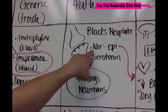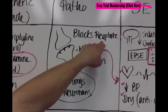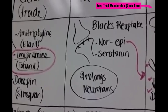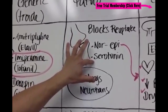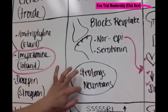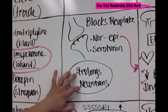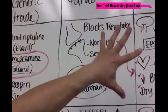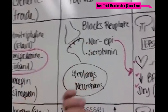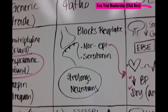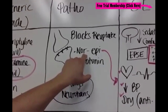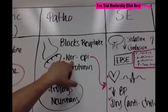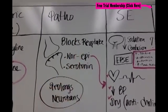With norepinephrine, there is a block in the reuptake. We're slowing down the communication of these neurons from communicating with each other. With serotonin, we are also slowing down that communication — it's basically a prolonging of the neurotransmitters. One side of the phone call is being delayed to the other connection because we're blocking these reuptake transmitters.